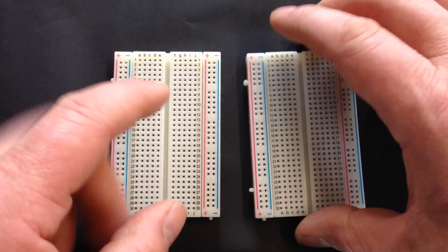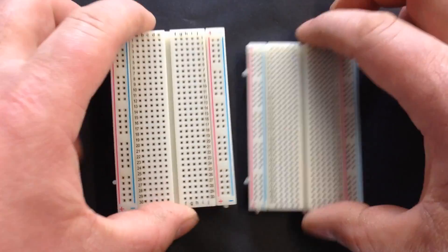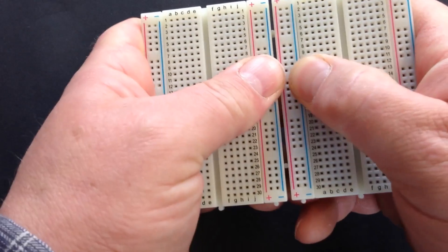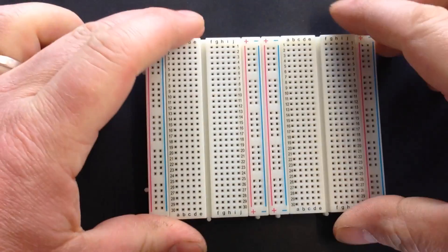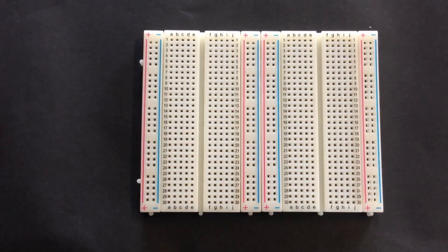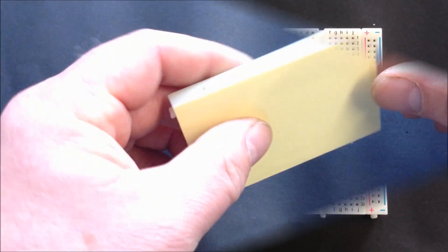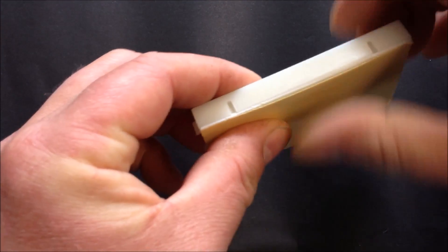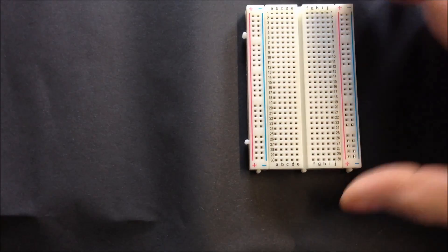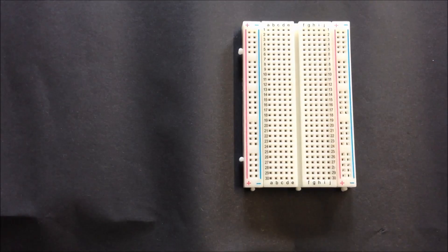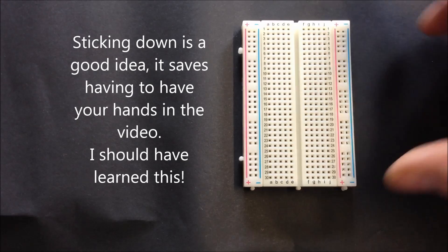On the side of the breadboards there are these little lugs which allow the two breadboards to be clipped together, allowing you to make one big breadboard. On the reverse of the breadboard there's a self-adhesive strip which allows you to secure the board to a firm work surface when you're working on the prototype.